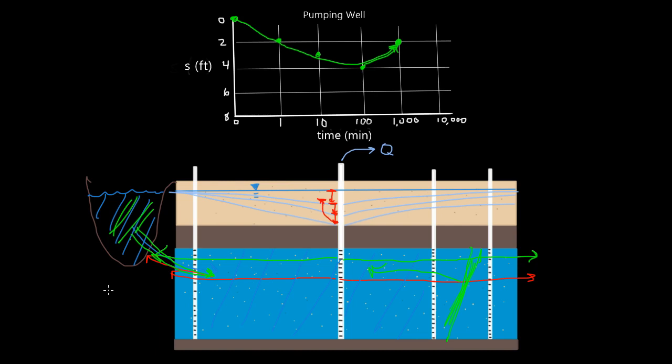That's going to wrap it up for this video. So in the last two videos, we talked about the drawdown curve. We've talked about steady state versus transient state. And now we've talked about boundary conditions. The next step in the video series will probably be looking at recovery data.